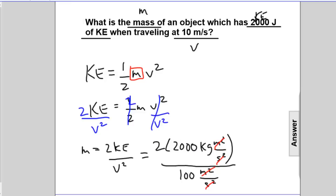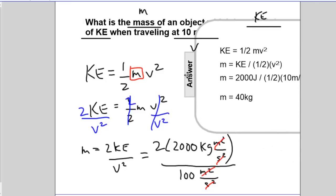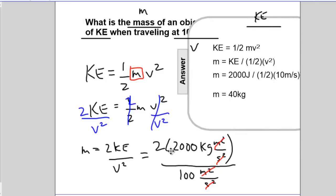And it will leave us with kg. Reveal the answer: 40. So again, 4,000 divided by 100 is 40 kg. Nice work.